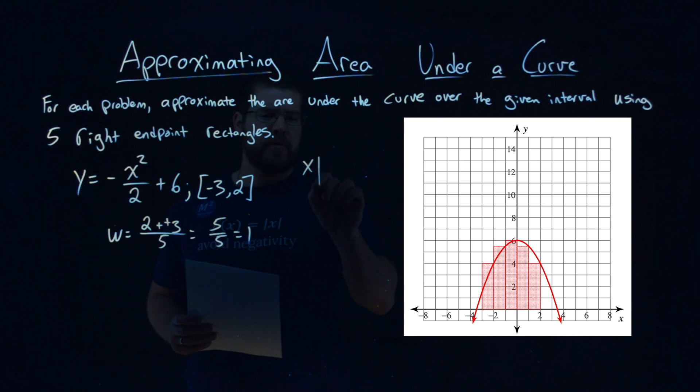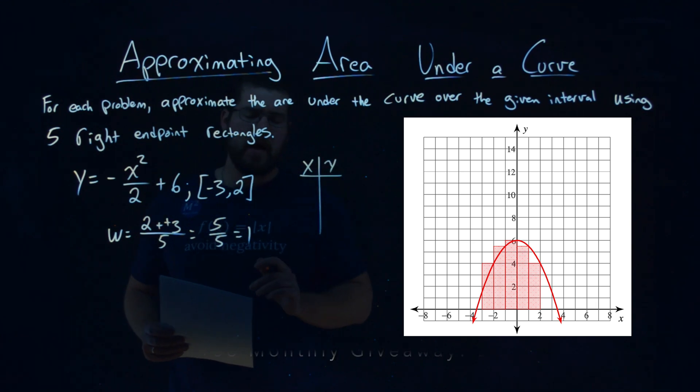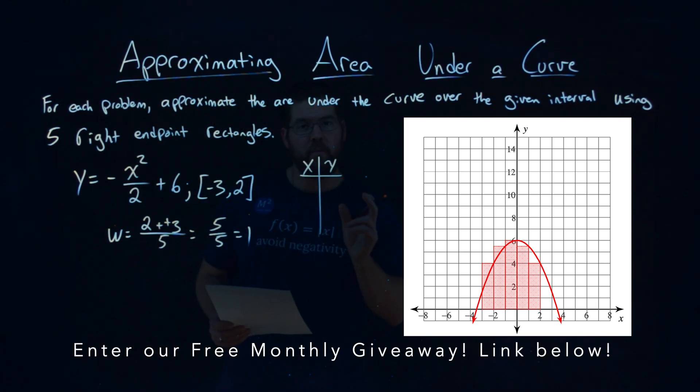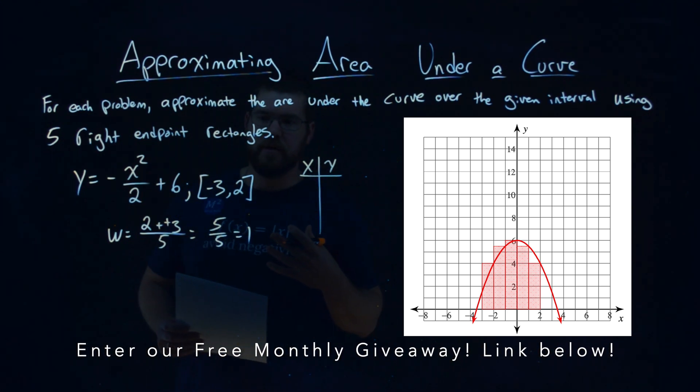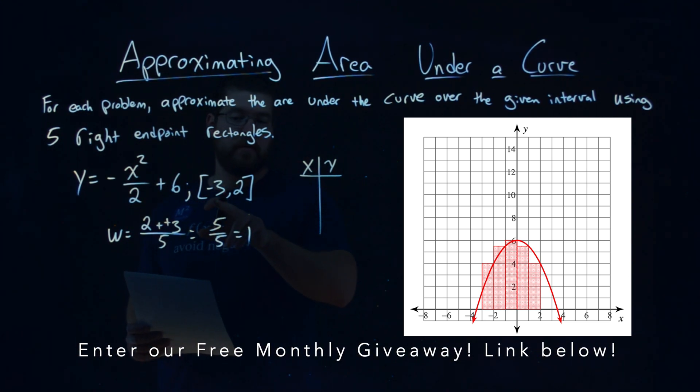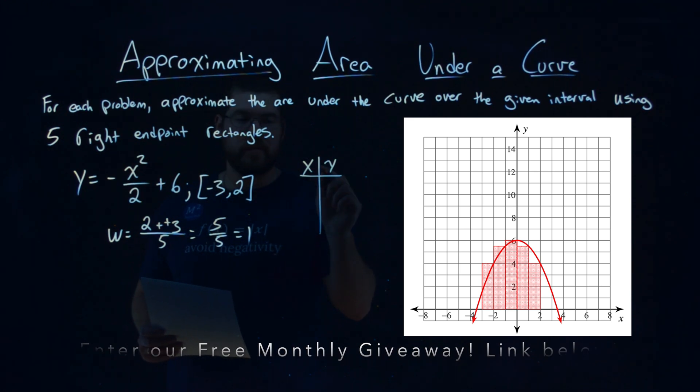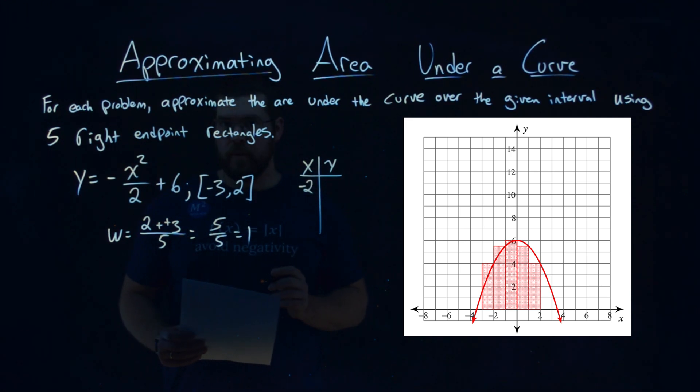So we need to go into a table here. Since we have a width of 1 for each rectangle to do a right endpoint for each one, I'm going to start with my lowest bound, negative 3, add 1 to it, which is negative 2, and that's my starting point.